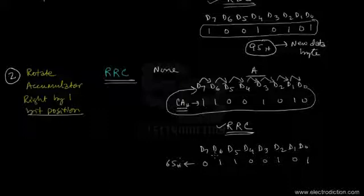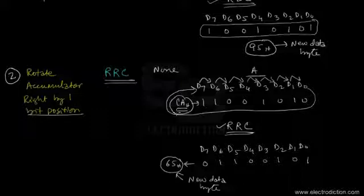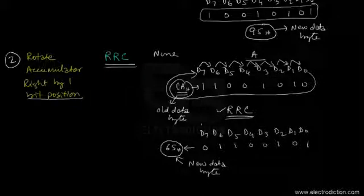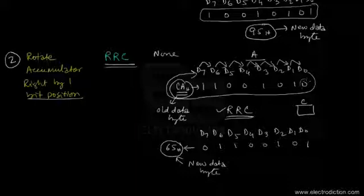The new accumulator data after executing the RRC instruction is 65H — that's our new data byte currently in the accumulator, while CAH was the old data byte. Like the RLC instruction, in RRC the bit at the D0 position — which is 0 here — that is transferred to the D7 position is also recorded by the carry flag.